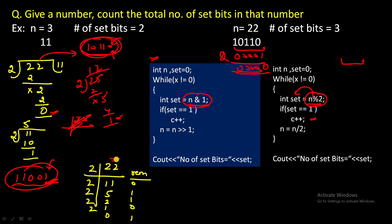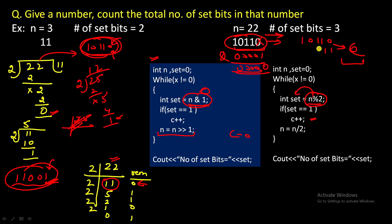So for n = 22: 22 AND 1 gives 0, meaning the LSB is 0, so we don't increment count. Now we need to change 22 to 11. We can do this with a right shift by 1: 22 in binary is 1 0 1 1 0. Right-shifting by one place removes the last 0 and shifts everything right, giving 0 1 0 1 1, which is 11.